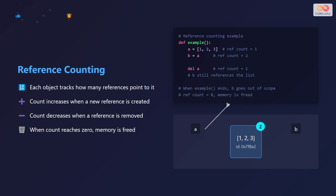When we delete A, the reference count is reduced to 1, but the list still exists in memory because B still references it. Once the function ends, B goes out of scope, and the reference count becomes 0, leading to the list's memory being freed.